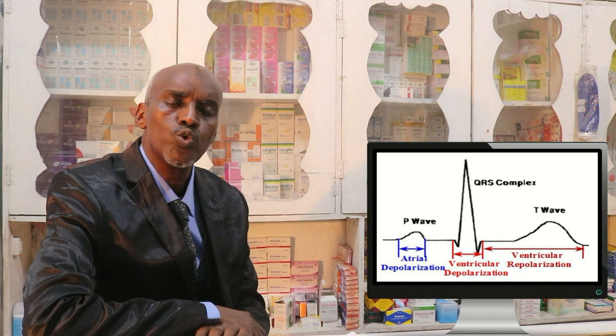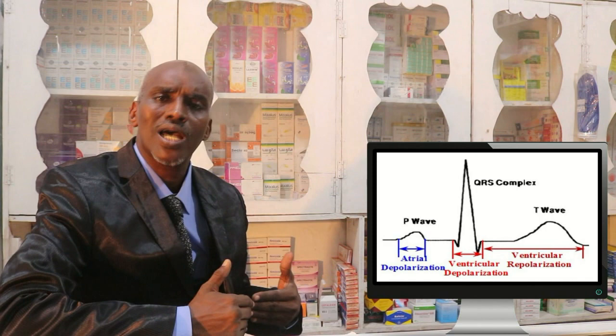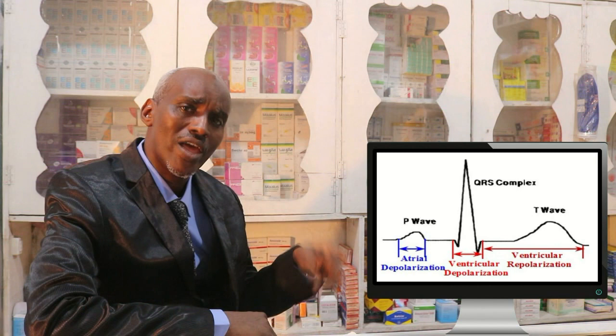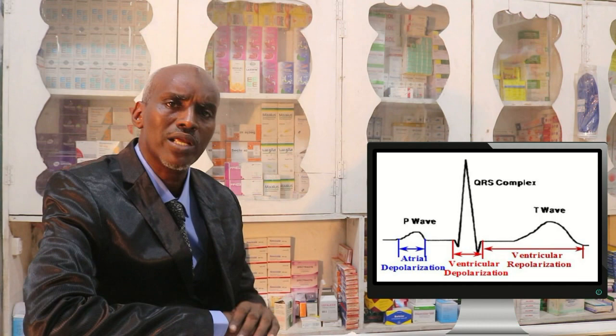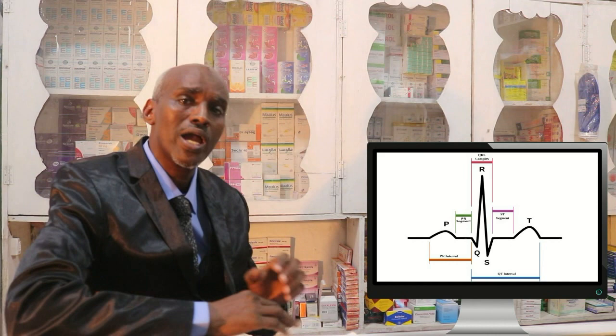This is the PR interval. The PR interval, as you can see, begins with the P wave representing the right atrium, then the left atrium. The PR interval is the time of conduction from the SA node through the AV node, then to the left and right atrium and down through the Purkinje fibers.